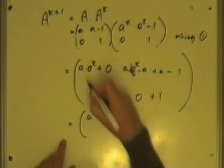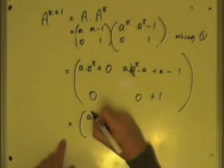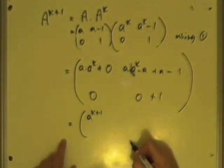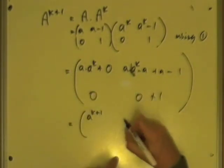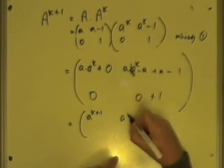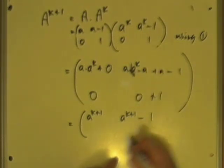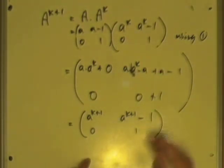Now, tidy this up, well, A to the K times another A, means there's one more factor, so it'll be K plus 1. Same with this one, and another factor of A, we'll lock it up to K plus 1, minus 1, 0, 1, and there we are.